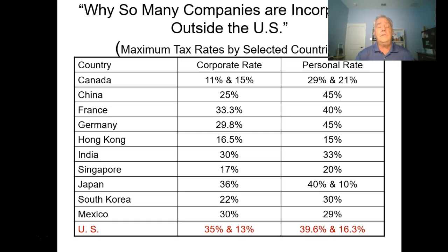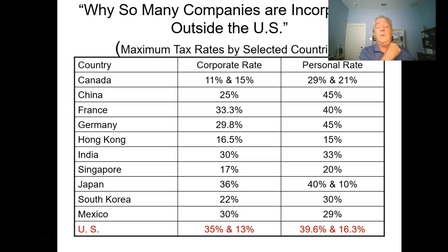The current administration wants to reduce the 35% corporate rate to make us more competitive in the world market. Corporations must factor taxes into the price of goods they sell to cover those costs. Under the NAFTA agreement, Canada pays about 26% total corporate tax, Mexico pays 30%, while U.S. corporations pay 35% plus 13%—a total 48% tax rate. That puts us at a disadvantage pricing products into NAFTA countries, and the same applies globally: Singapore 17%, Korea 22%, China 25%.